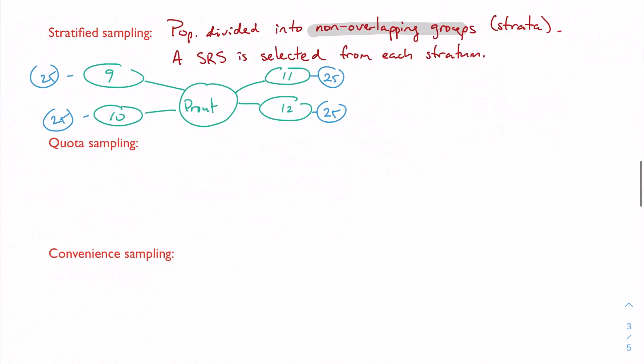Quota sampling is very simple, or similar. It's actually, I guess it's kind of simple too. It's a stratified sample, essentially, but the sample sizes from each stratum are proportional to the distribution in the population.